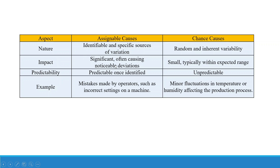Assignable causes have a significant impact, often causing noticeable deviations, and are predictable once identified. An example would be mistakes made by operators such as incorrect settings on a machine. Chance causes, on the other hand, involve random and inherent variability — typically small, within the expected range, and unpredictable. An example of a chance cause is minor fluctuations in temperature or humidity affecting a production process.